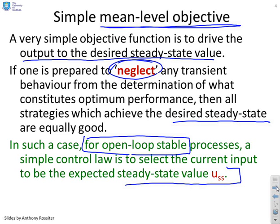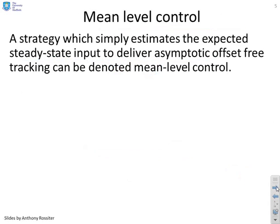So mean level control, this is a strategy which simply estimates the expected steady-state input and implements it. And this will deliver asymptotic offset-free tracking as long as that estimate is unbiased.